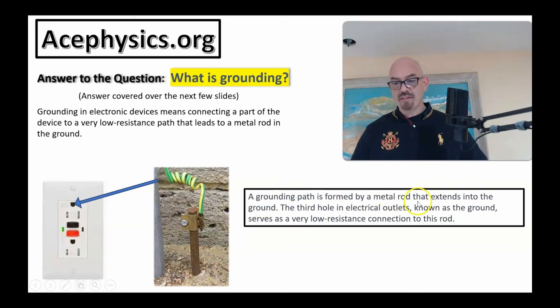A grounding path is formed by a metal rod that extends into the ground. The third hole in the electric outlet, known as the ground, serves as a very low-resistance connection to the rod. This third hole in the electric outlet has a low-resistance path that leads to this grounding rod.